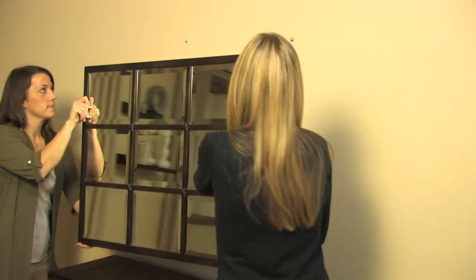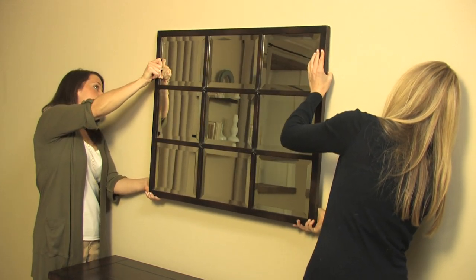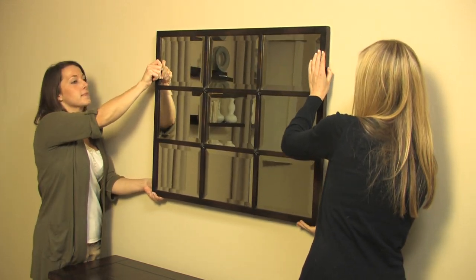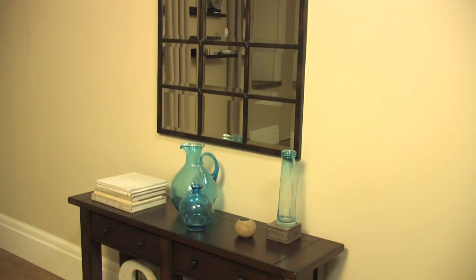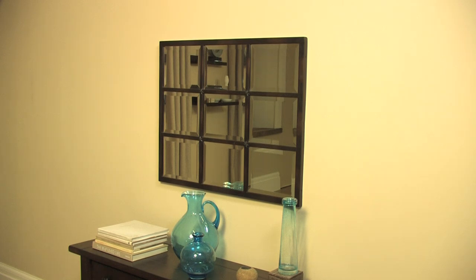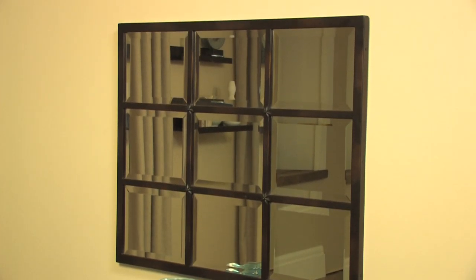With the help of another person, lift the mirror so that the D-rings align with the protruding screw heads. Lower the mirror so that each screw head captures each respective D-ring and supports the mirror. Do not let go of the mirror until you are sure that each screw is firmly holding a D-ring.